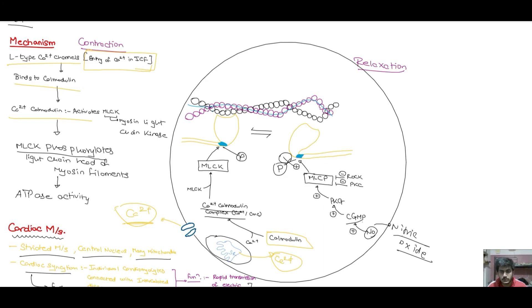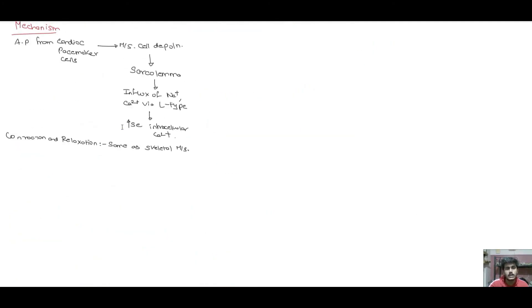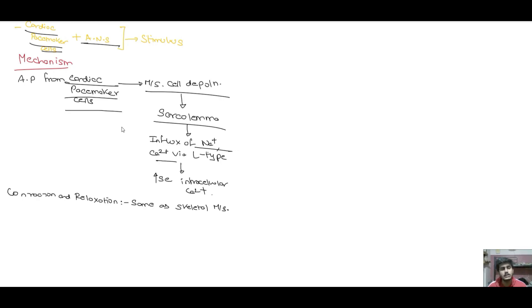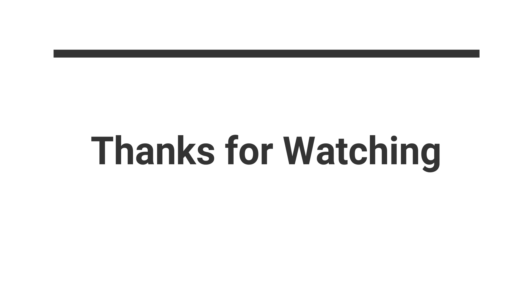Finally, for cardiac muscle, the sequence is: first, cardiac pacemaker cells initiate the signal; then depolarization occurs; the sarcolemma (plasma membrane) depolarizes, leading to an influx of calcium and sodium ions, generating a positive charge. This process is similar to skeletal muscle — the myosin binding sites on the actin filament are exposed, and the actin-myosin binding process proceeds to contraction.